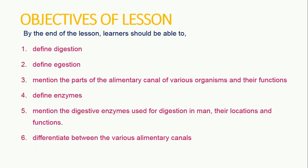Objectives of the lesson. By the end of the lesson, learners should be able to: 1. Define digestion. 2. Define digestion. 3. Mention the parts of the alimentary canal of various organisms and their functions. 4. Define digestive enzymes. 5. Mention the digestive enzymes used for digestion in man, their locations and functions. 6. Differentiate between the various alimentary canals.